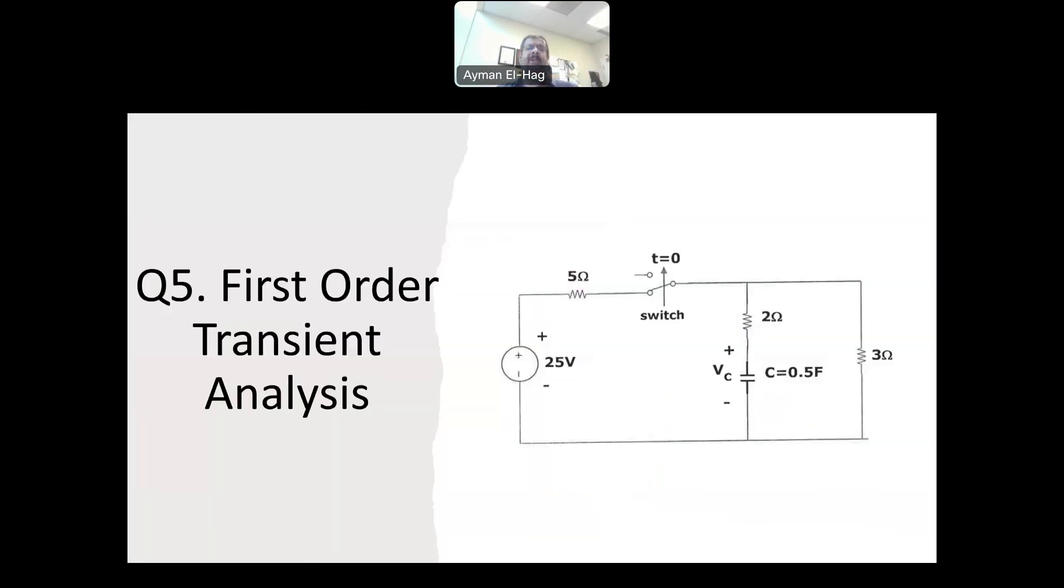The last question is about the first order transient analysis, which is different than the one I told you that if I were you, I would skip it, which is the second order that requires the Laplace. Here, it does not require Laplace. In the first order circuit you have either a capacitor or an inductor. In the second order, you will have both a capacitor and an inductor. Now, in most of the questions I have seen, I found only capacitors. I didn't find any question with an inductor, so I solved two examples.